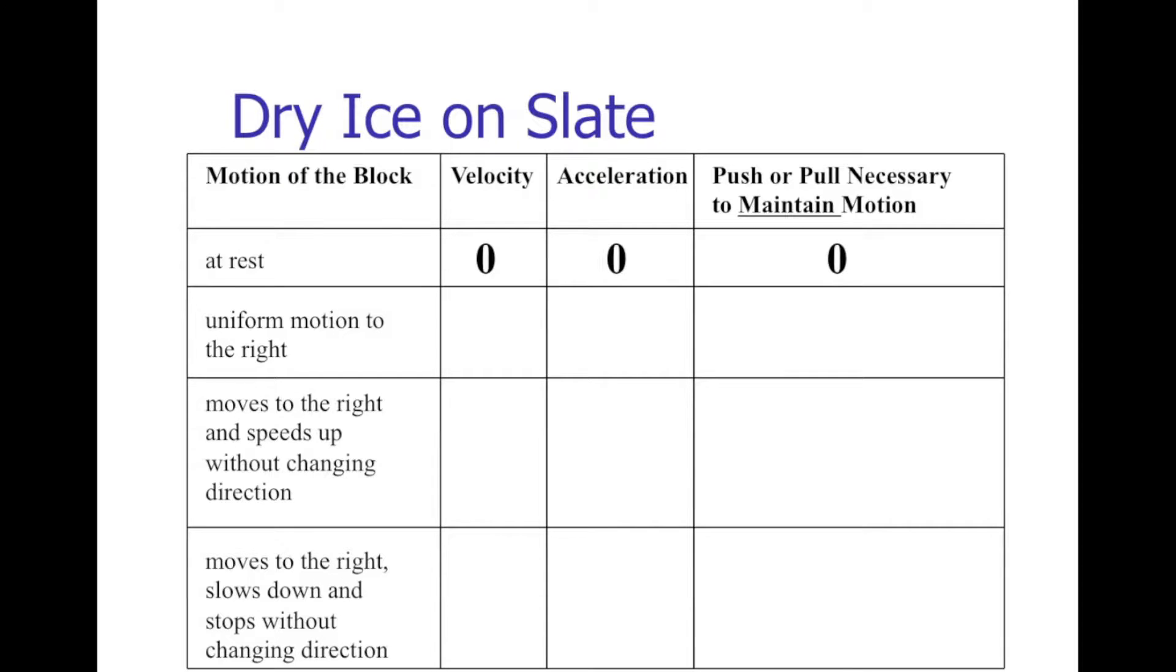So I'm going to fill in the rest of the table here. For the motion of the block, I've got various situations that I would like to create or maintain. When the block is at rest, its velocity is zero, its acceleration is zero, and I don't have to do anything to it in order to maintain that state of rest. Let's say that I find the block in uniform motion to the right. In that case, it's got velocity to the right, but because it's in uniform motion, it's not changing its velocity, and so it's not accelerating. And because of Newton's first law, I know that an object in motion will maintain that motion unless acted on by an outside force. So push or pull necessary to maintain that motion? None.